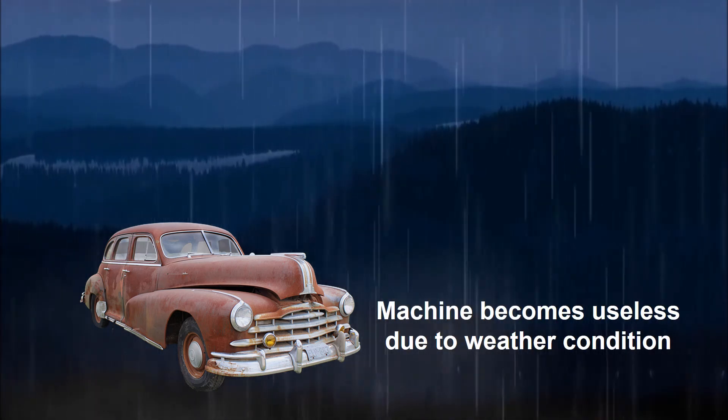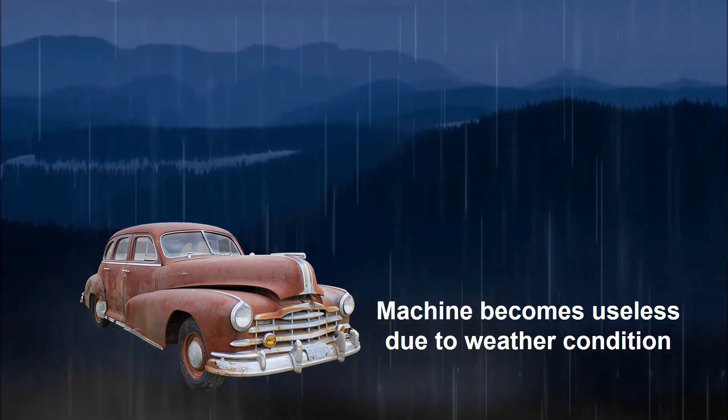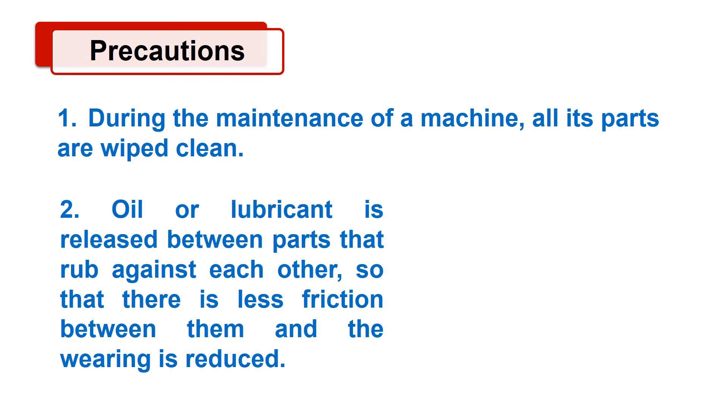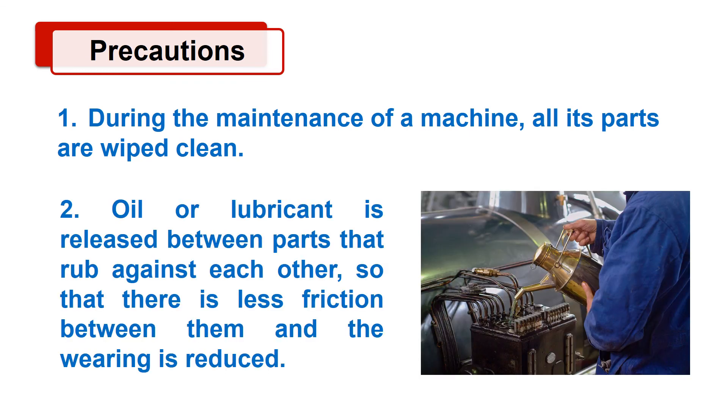To avoid this, let's see what are the precautions we should take for maintenance of machines. During the maintenance of a machine, all its parts are wiped clean. Oil or lubricant is released between parts that rub against each other so that there is less friction between them and the wearing is reduced.